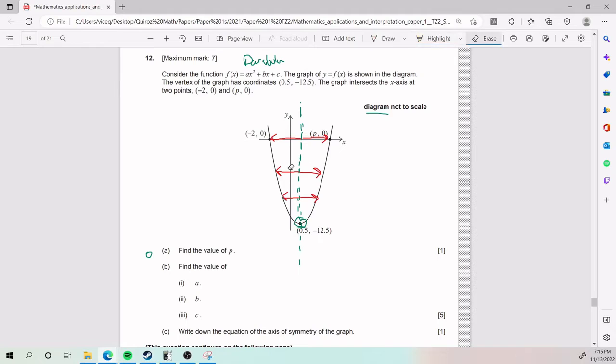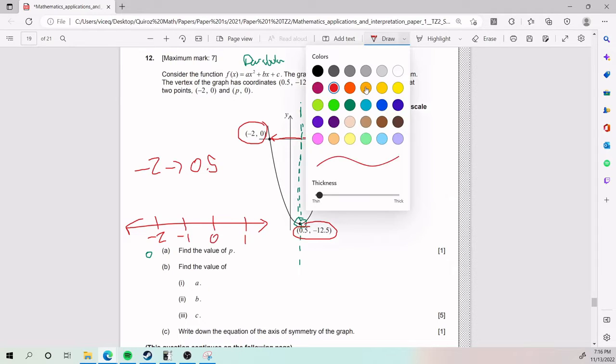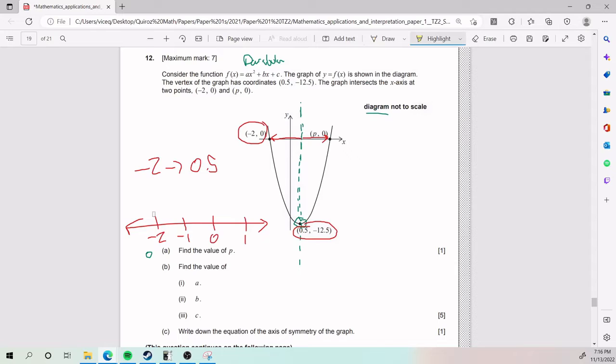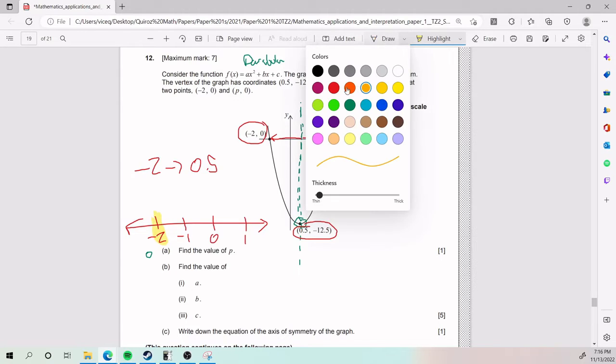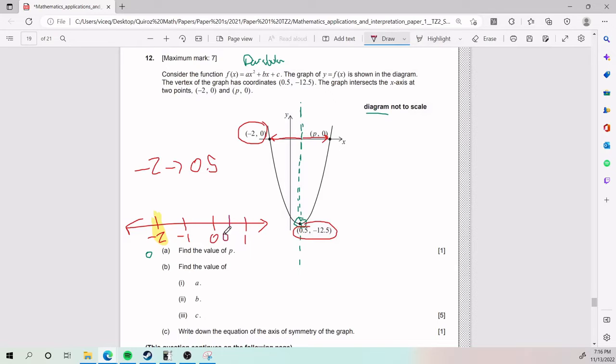Anyways, you probably know where this is going at this point. The distance from here to here is the same as the distance from here to here. So that is actually something that can help us find p. And so what is that distance that I just drew in red? Well, the numbers we can work with are negative 2, 0 and 0.5, negative 12.5. Since we're drawing a horizontal line, we're looking at the x values, so we need to compare negative 2 to 0.5.